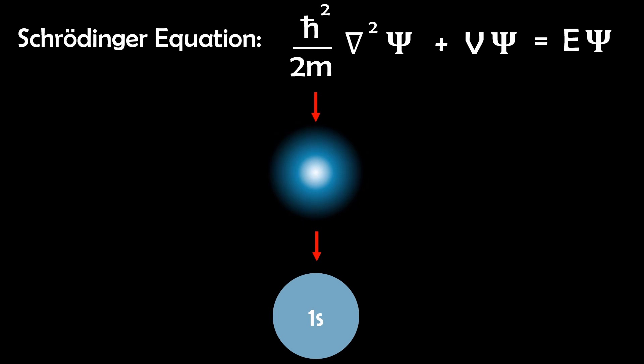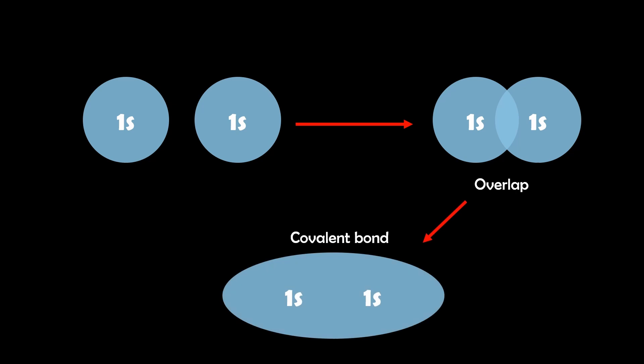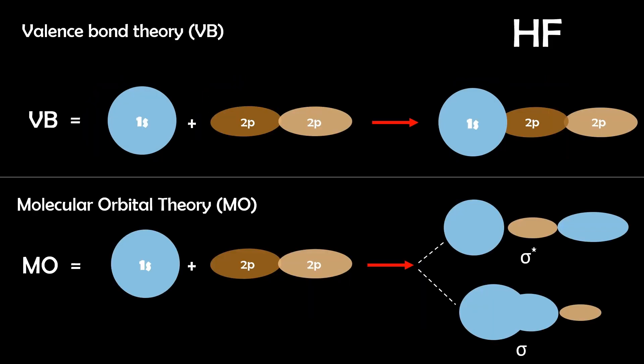So by understanding atomic orbitals and how they can interact we can gain insight into molecular formation and from this two useful theories emerge: Valence bond theory and molecular orbital theory.